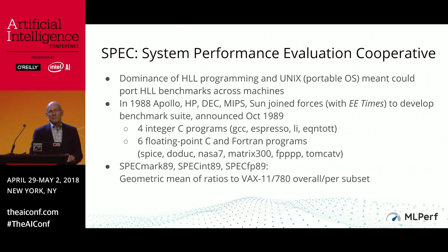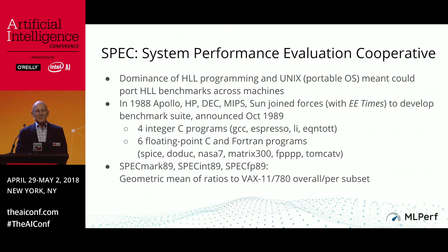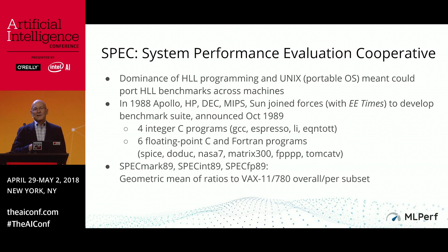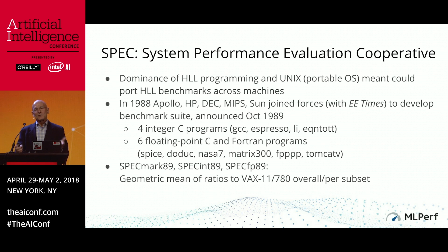The reaction, remarkably, was for these competing organizations — HP, DEC, MIPS, Sun Microsystems — that competed fiercely in the marketplace, to create a cooperative and a standard set of benchmarks so they could agree on how to measure performance. This happened 30 years ago, and that first iteration had 10 programs — 4 integer, 4 floating point. You would figure out how much faster your machine was than the VAX 11/780, and then calculate the geometric mean of that ratio so that bigger was better.